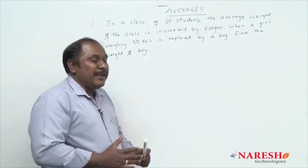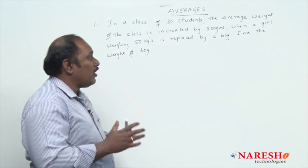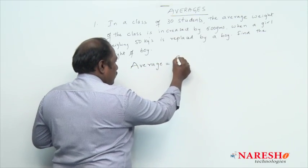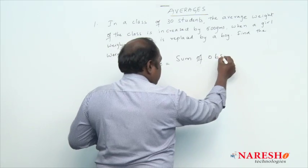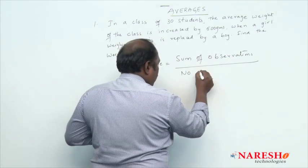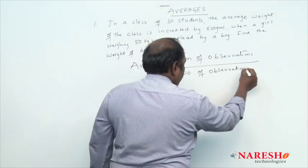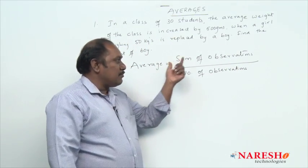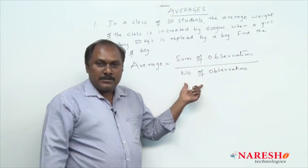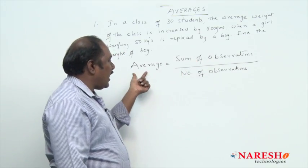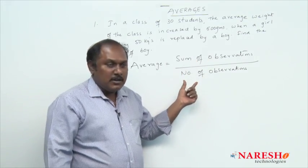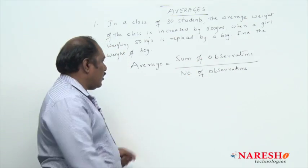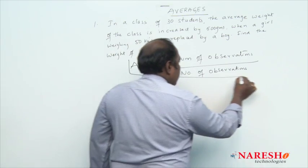First of all, what do you mean by average? According to the formula, average is equal to sum of observations divided by number of observations, and these observations should be of similar type. So, sum of observations equals average multiplied by number of observations, or number of observations equals sum of observations divided by average. Using this formula, we can solve the problems.